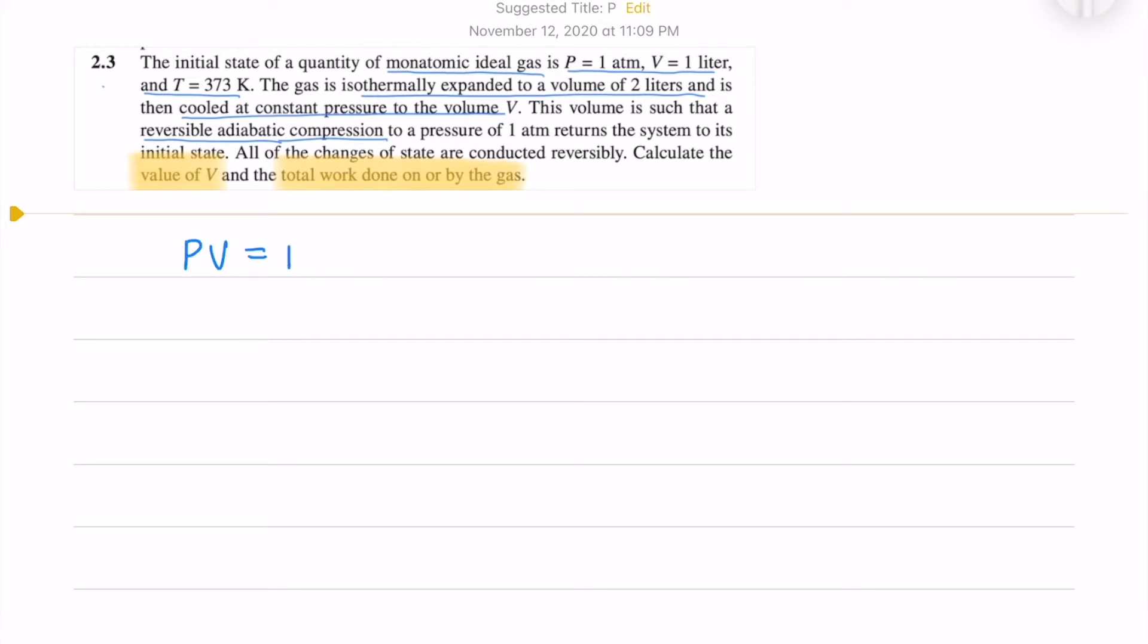First we'll calculate the number of moles using the ideal gas equation PV equals nRT. We are given the initial state properties pressure, volume and temperature, and with that I calculate the number of moles.